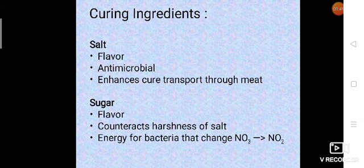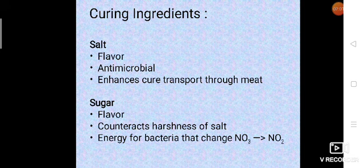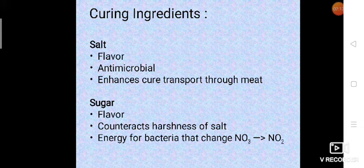Sugar is used for flavor enhancement. It counteracts with harshness of salt, provides energy for bacteria which changes NO3 nitrate to NO2 nitrogen dioxide. Sugar helps in lowering the acidity of cure and sugar can also be added in the form of either sucrose, that is table sugar or brown sugar or dextrose, refined corn sugar and corn syrup solids.